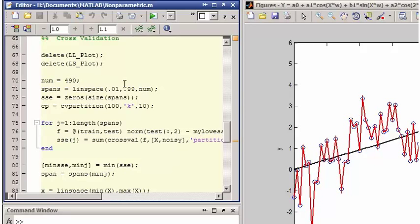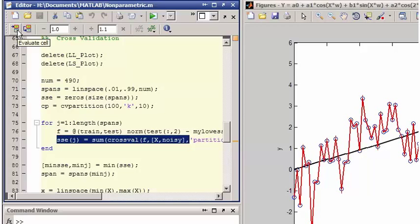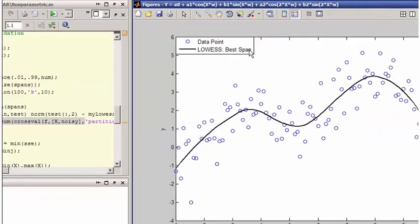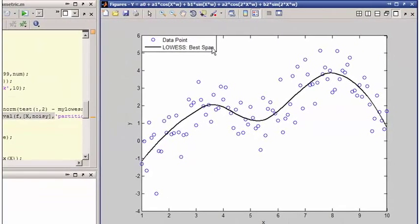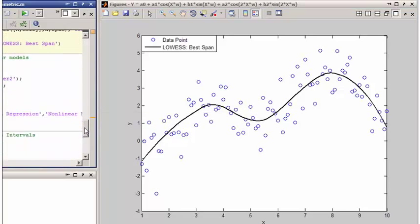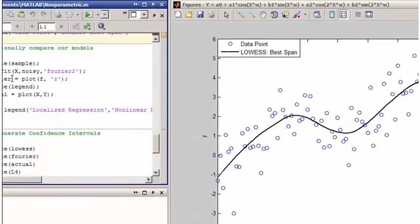You can identify the best spanning parameter for this data set using a technique known as cross-validation. This plot shows a localized regression model generated using an optimal span that we estimated using cross-validation.